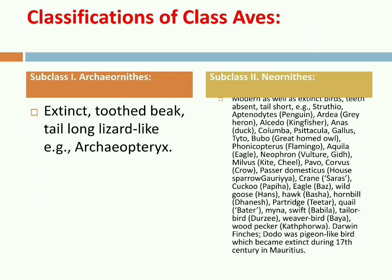Archaeornithes: 'Archaeo' means ancient, 'ornithos' means birds. These are primitive, extinct birds from the Upper Jurassic period. These birds show some reptilian and some avian features, so they are a connecting link between reptiles and birds. Examples include Archaeopteryx lithographica and Archaeornis siemensii.